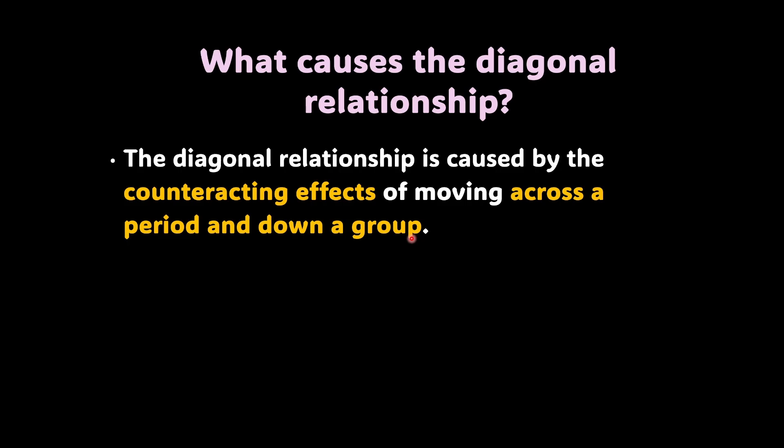When we are moving across a period, the trends will be a certain way. When we are moving down the group, the trends are mostly going to be opposite. And that is why if we look at them as two vectors, the resultant shall be, that's right, this shall be the resultant vector, right? And what is it?